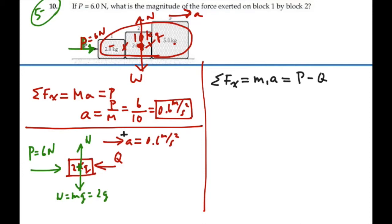We want to solve for Q. So Q will equal P minus mass 1 times A. So that is going to be equal to 6 Newtons minus 2 times A, which is 0.6, which is going to be 4.8 Newtons.